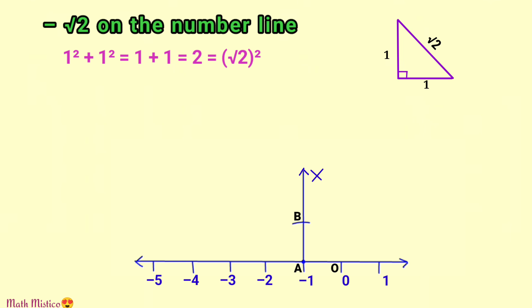Let's mark this point as B. So AB is the second side of the triangle. Joining B to O, we get the hypotenuse whose length will be equal to √2. Now to find the position of minus √2 on the number line, we will take this distance as the radius on a compass and center at O.